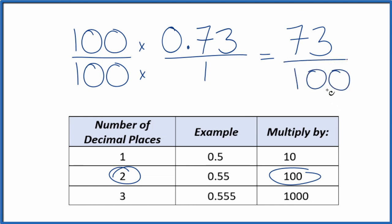And now we have our fraction, 73 over 100. So the decimal 0.73 is equal to the fraction 73 one-hundredths. We can't reduce this any further. If you divide 73 by 100, you'll get the decimal 0.73.